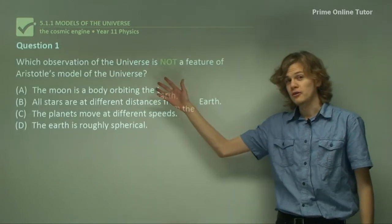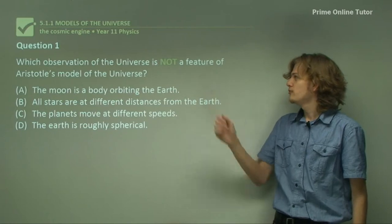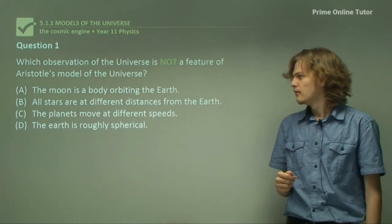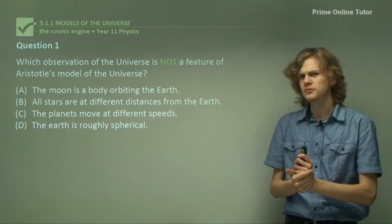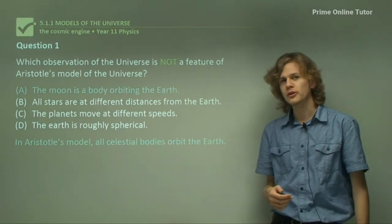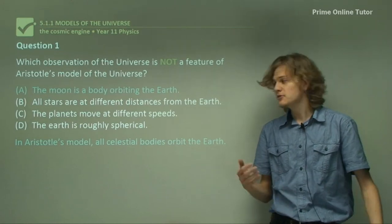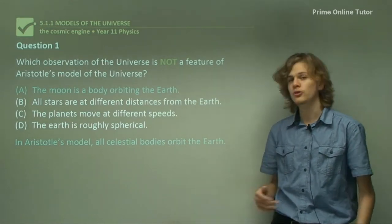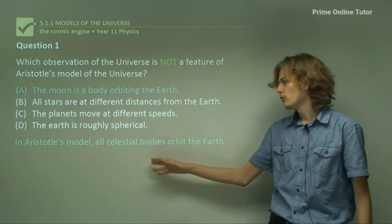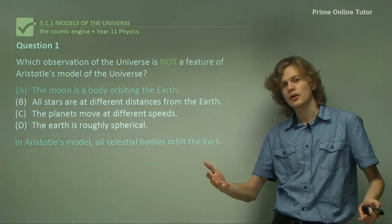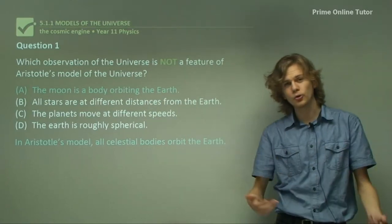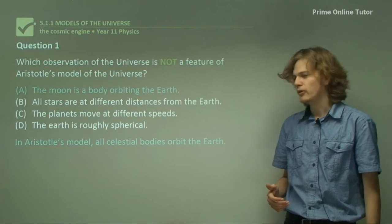Which observation of our current universe is not a feature of Aristotle's model of the universe? Let's go through the options. A. The moon is a body orbiting the Earth. Well, even today, we believe that the moon is a body orbiting the Earth. In Aristotle's model, all celestial bodies orbit the Earth. So this is something that's predicted by both our current model and Aristotle's model.